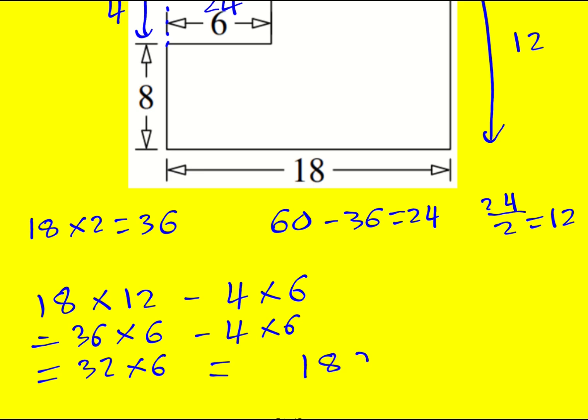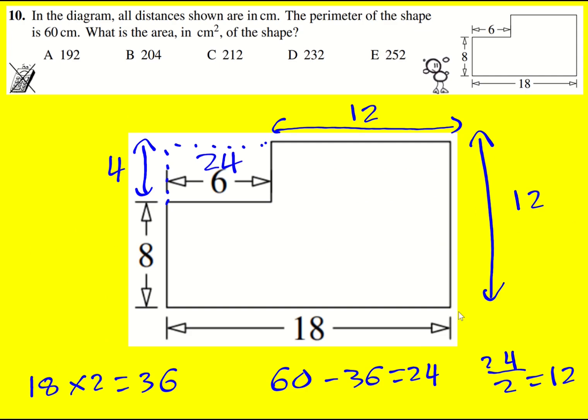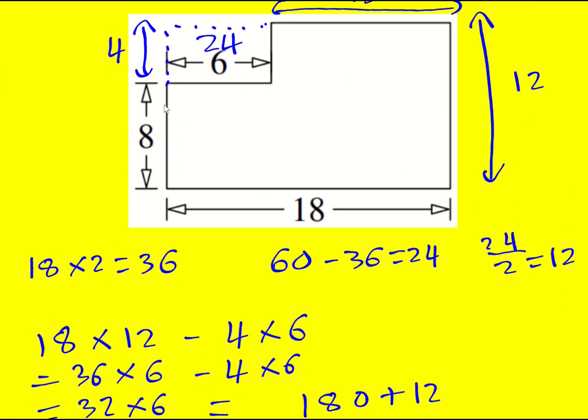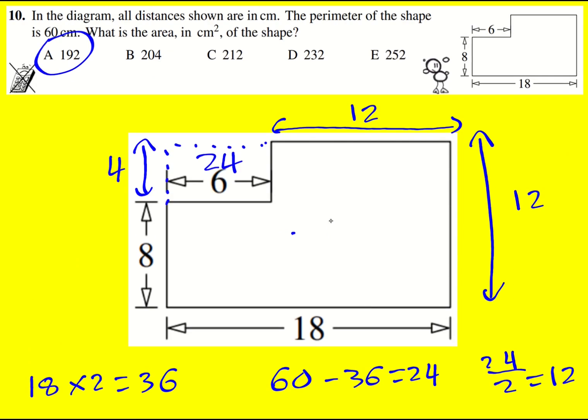So 30 times 6 is 180, and 2 times 6 is 12, so we're going to get 192. Of course you don't need to do what I just did there, the main thing is getting to this point, but in any case, 192.